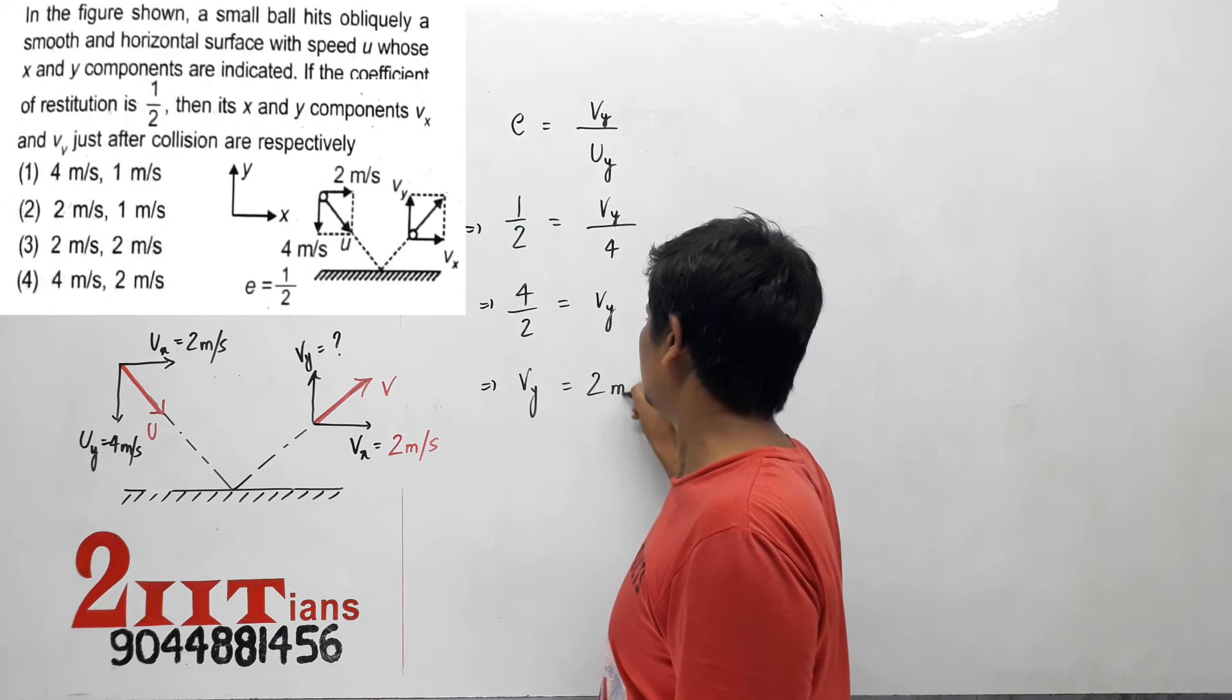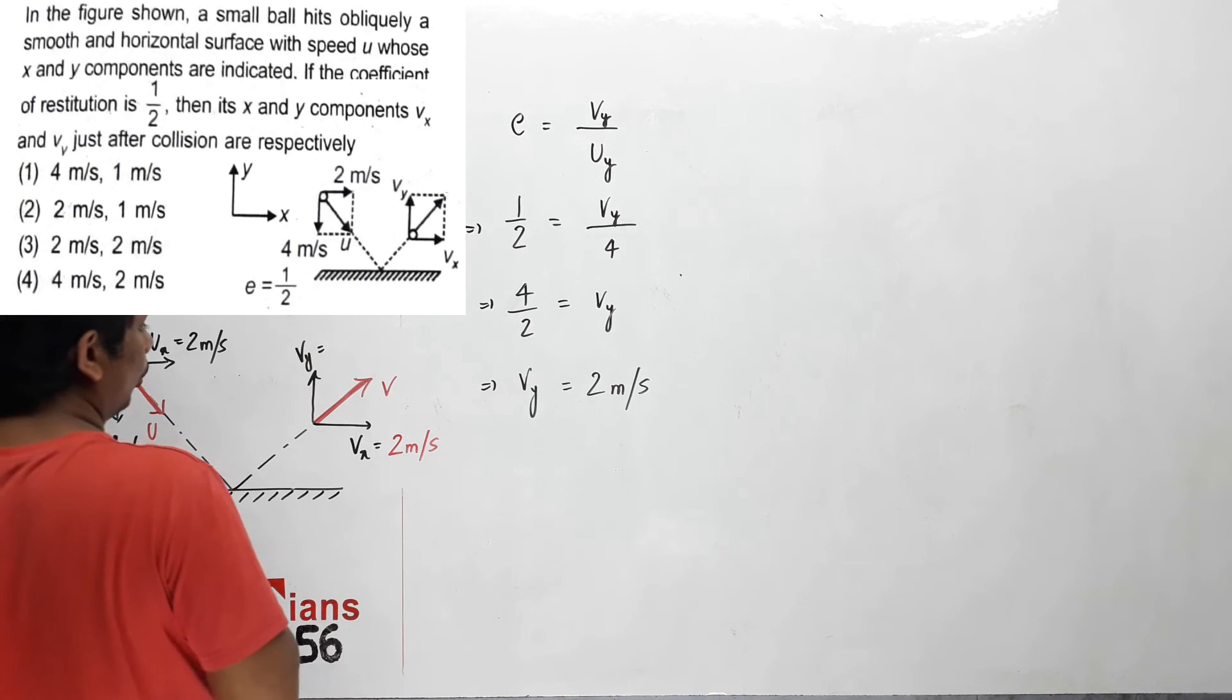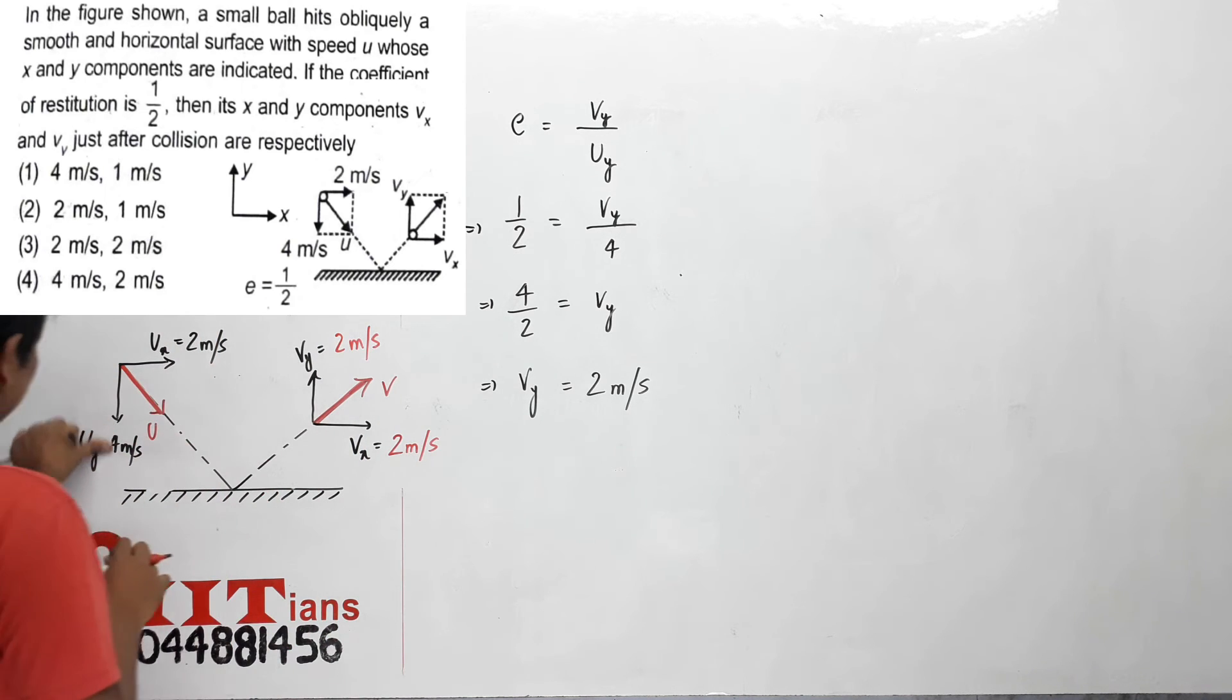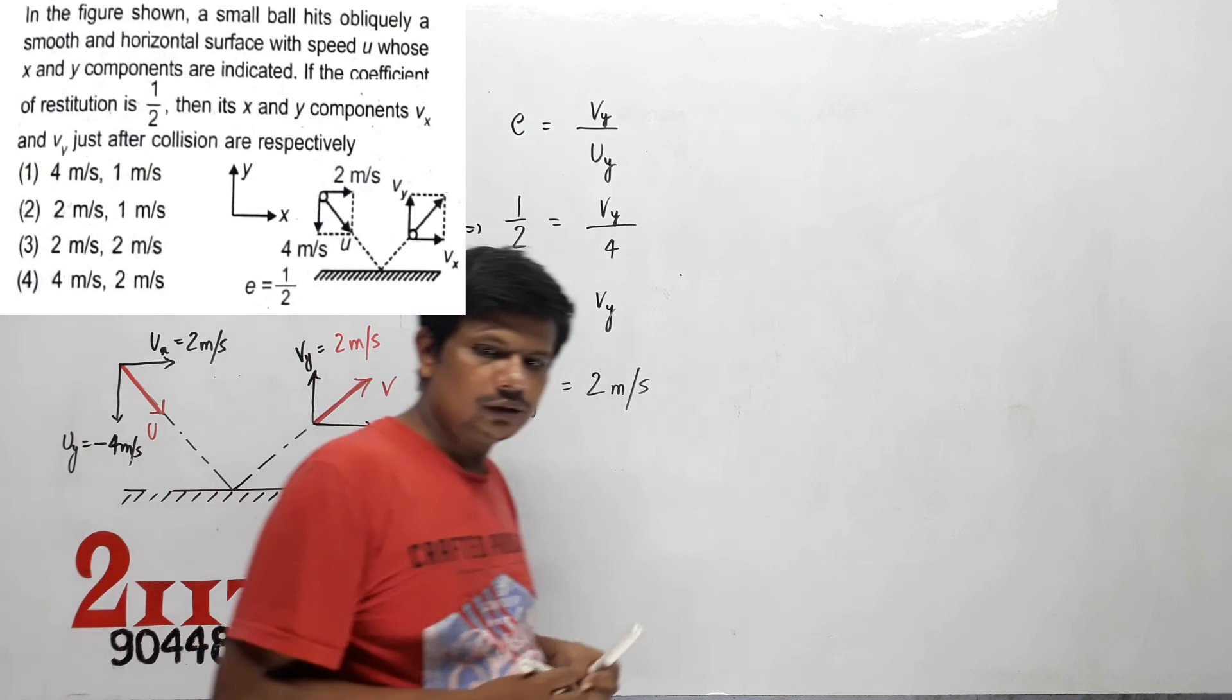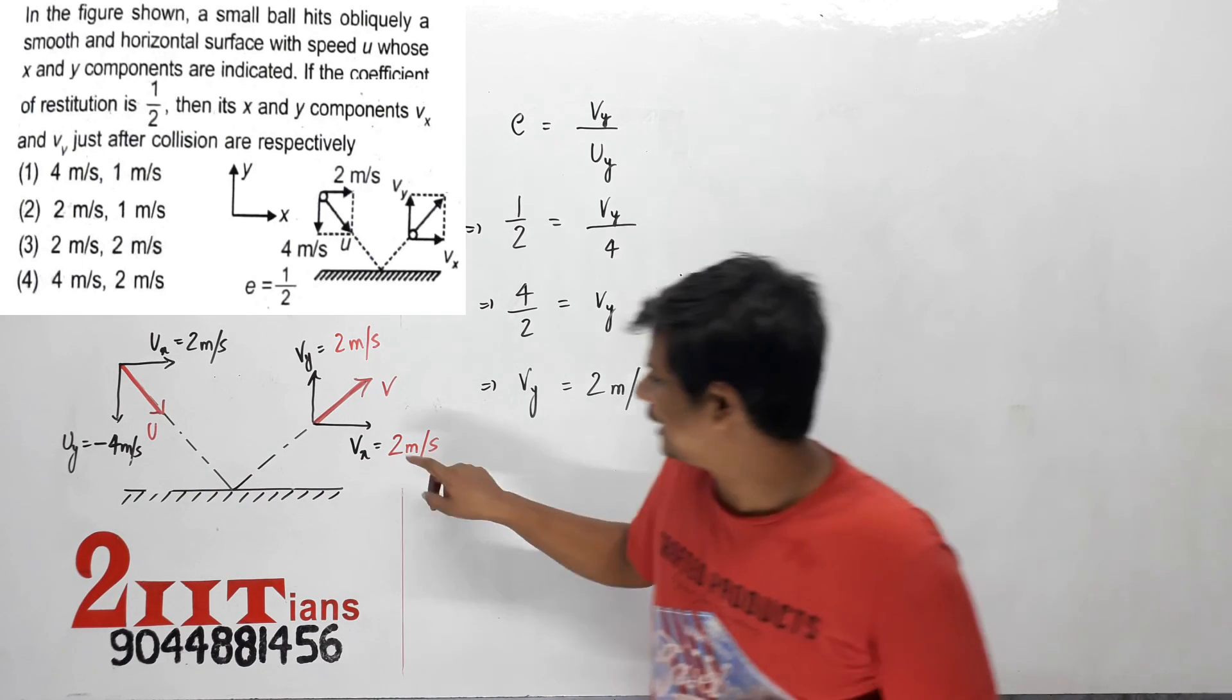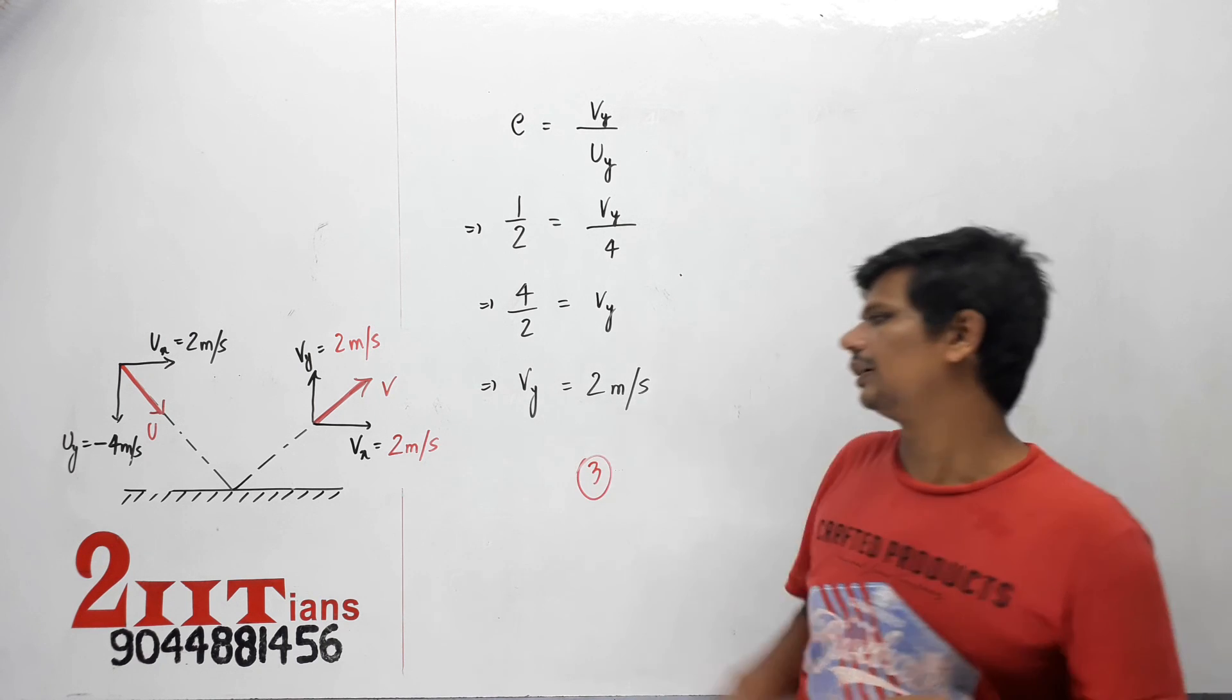vy ho gaya 2 meter per second. Theek hai, toh dono 2 ho gaye. Achha, agar value kaide se yeh log dete toh uy hota minus 4 aur vy hota plus 2, coordinate direction ko consider karte huye. Toh ab fortyfive ke dono hi answer 2, 2 aa rahe hain, toh option 3 is correct.